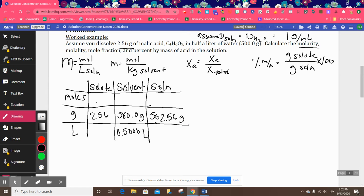And so we filled in with everything we already know. Now for moles, all we have to do is convert 2.56 grams of malic acid, which is C4H6O5, to moles. Set up your fence. One mole of malic acid is 134.10 grams, and we get 0.0191 moles. So I'm going to put that in here, 0.0191.